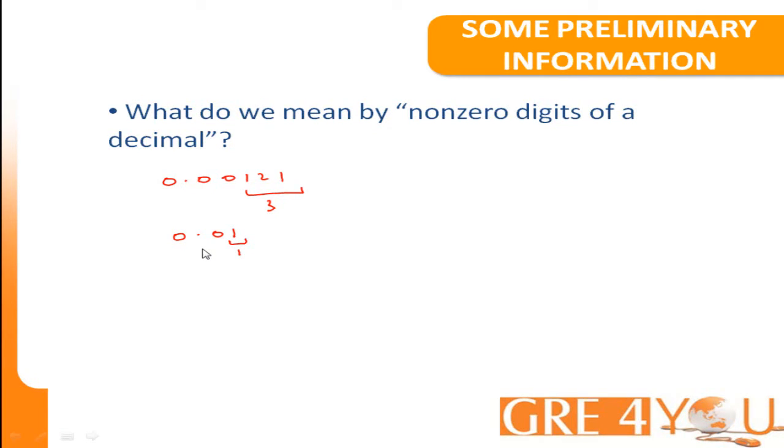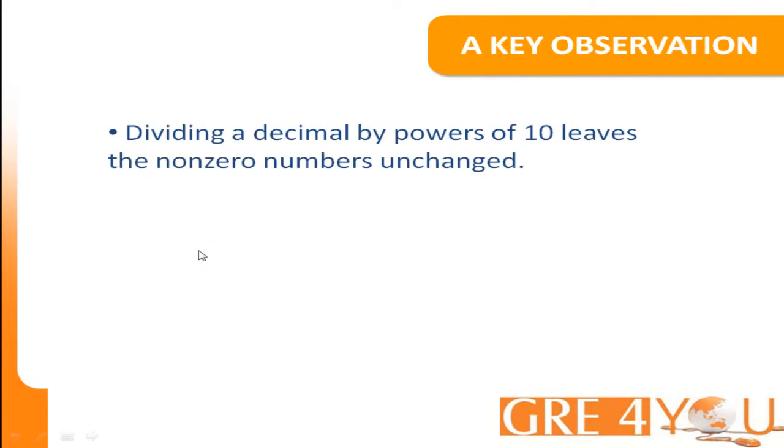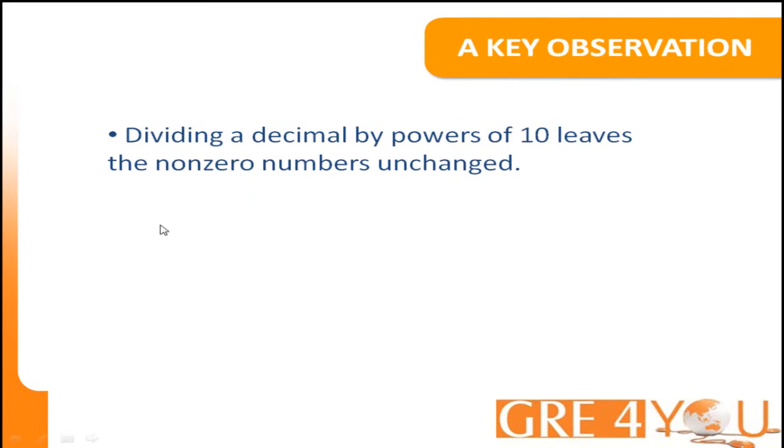Now that we've seen something about these two terms, let's go ahead and take a look at a key observation that we have to make. Dividing a decimal by powers of 10 leaves the non-zero numbers unchanged.